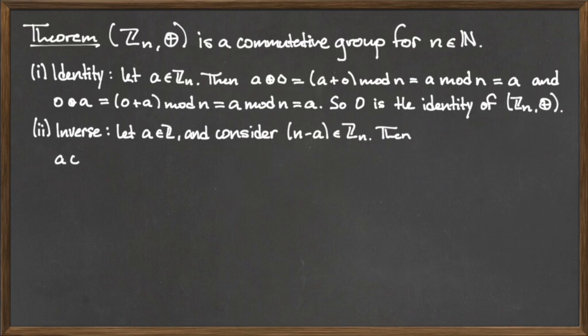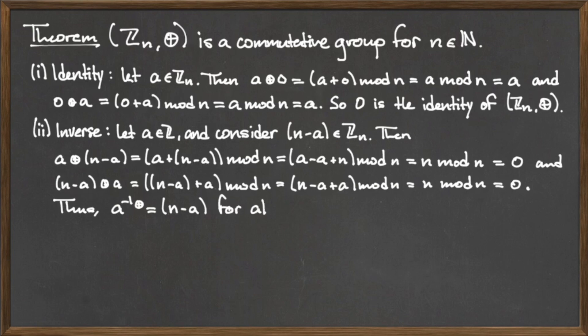For the inverse requirement, let a be any element in Z mod n, and consider the quantity n minus a, which is also in Zn. If we apply the binary operation ⊕ to a and the quantity n minus a in either order, the result is zero both times.